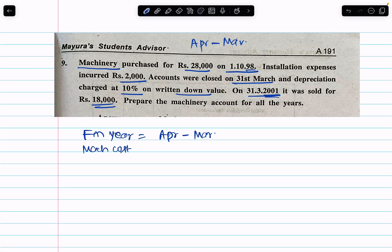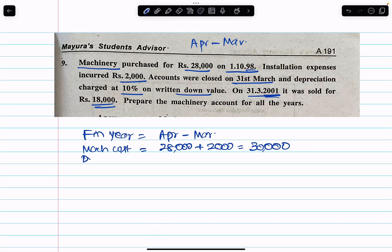Machine cost equals $28,000 plus installation cost of $2,000, giving a total capitalized cost of $30,000. Whatever you spend on installation the first time, you can capitalize it. So purchase price plus installation — all capitalization — gives us $30,000 as the depreciable base.